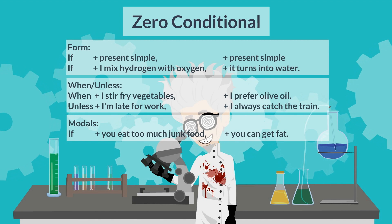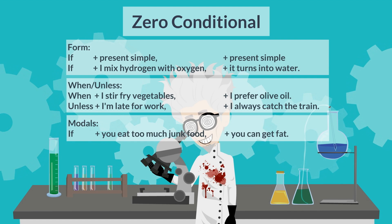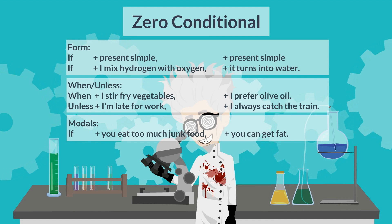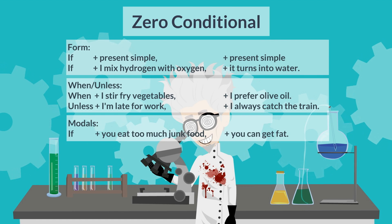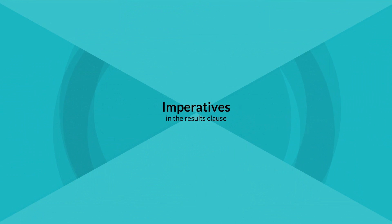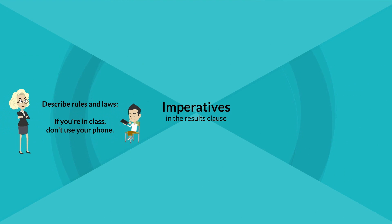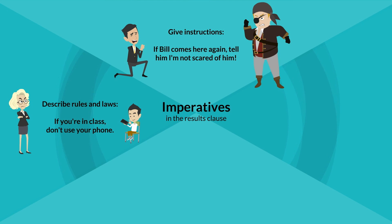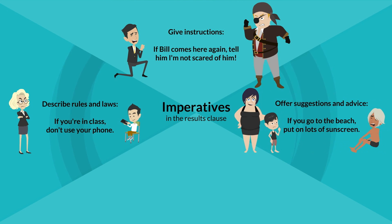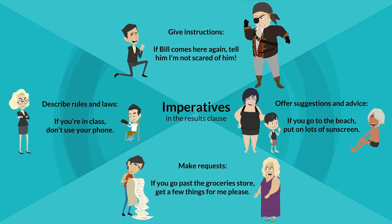Modals are common in zero conditionals and can be used in either of the clauses. "If you eat too much junk food, you can get fat." Imperatives are common in the results clause when we describe rules and laws: "If you're in class, don't use your phone." Give instructions: "If Bill comes here again, tell him I'm not scared of him." Offer suggestions and advice: "If you go to the beach, put on lots of sunscreen." And make requests: "If you go past the grocery store, get a few things for me please."